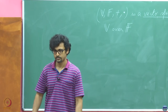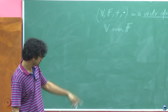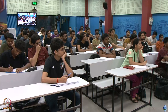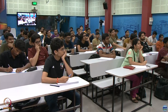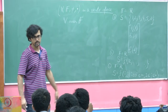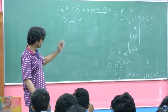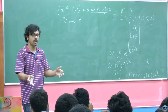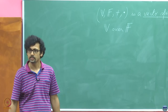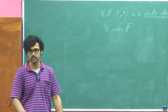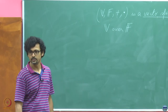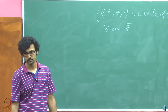A student asks: is the number of elements in S in the second space finite? No, it doesn't have to be finite. The sequences can be infinite — countably infinite. So these are infinite sequences. But if you add two infinite sequences, you will get another infinite sequence, so it is closed under the rule of vector addition and does satisfy all those properties.